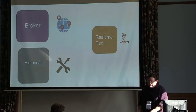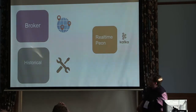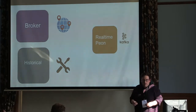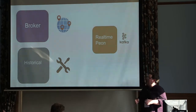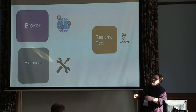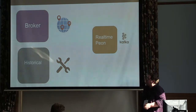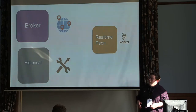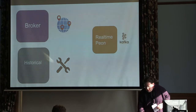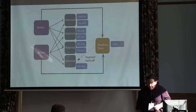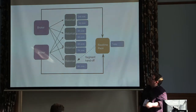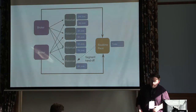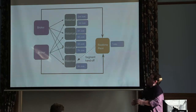When it comes to querying, there are a few different node types that are important. First are the real-time peons — nodes responsible for consuming data in real time and answering queries on data currently being ingested. Second is the historical node, which takes all those segments, maps them into memory, and can answer queries on them, storing specific segments for specific time ranges. Beyond that, you have the broker — the front end to the query engine. The broker understands where all the data segments are and which historicals have which data. When you ask it a question spanning a week, it knows to send today's data query to the real-time node, yesterday's to historical one, the day before's to historical two. It builds up that query plan, sends all the queries in parallel, waits for the results, merges them in a streaming fashion, and returns them to the user.